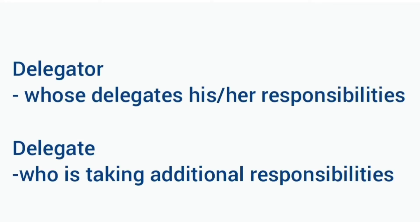We use two different terminologies: delegator and delegate. The delegator is the person whose responsibilities are delegated, and the delegate is the approver who is taking on the additional responsibilities. In GRC Access Control, the delegate is authorized to perform the tasks of the delegator.